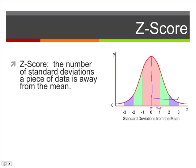If you're to the right, z-scores are positive. If we're to the left, you would be taking the mean and subtracting a standard deviation, giving a negative z-score. So to the left is negative z-scores, to the right is positive z-scores.